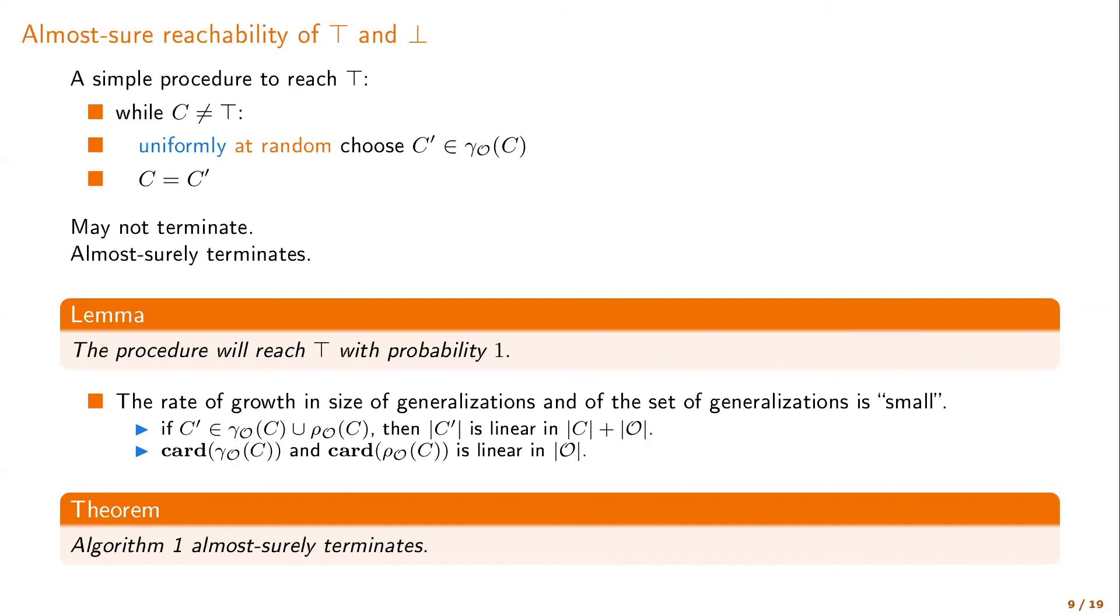And I will not give you the proof here, but the intuition is that while a concept can have a number of different generalizations, the growth of the size of the number of possible generalizations or specializations is not too big. So eventually in some way we will reach a top or bottom depending on whether they specialize or generalize. And so our algorithm will almost surely terminate.